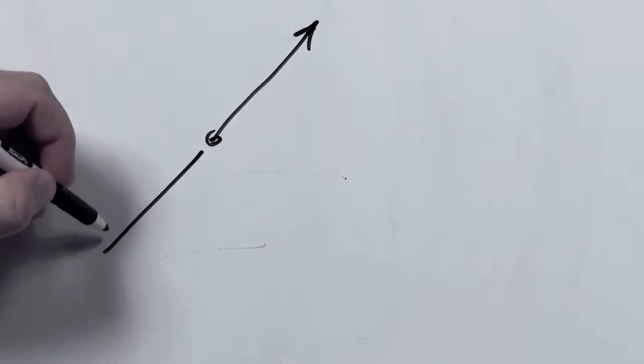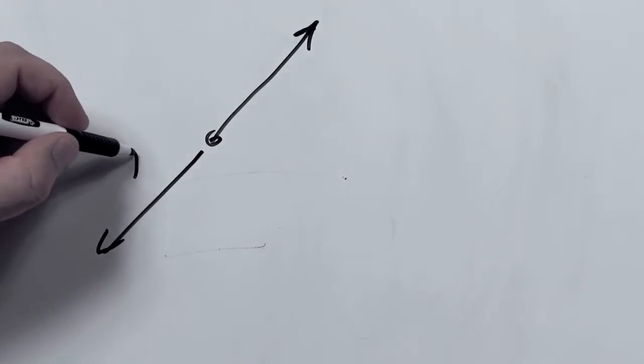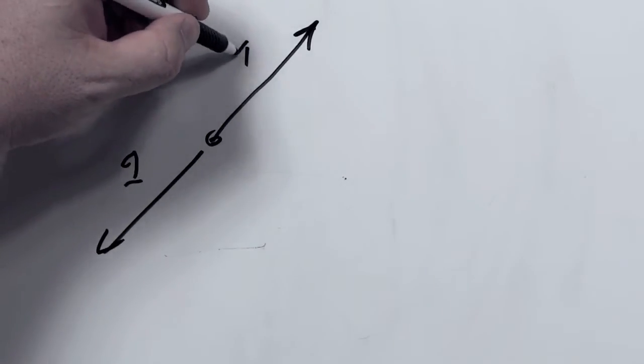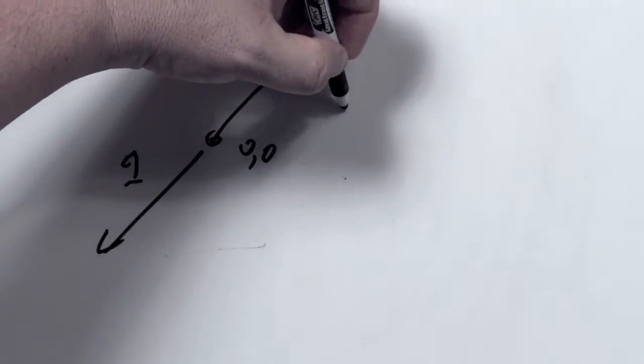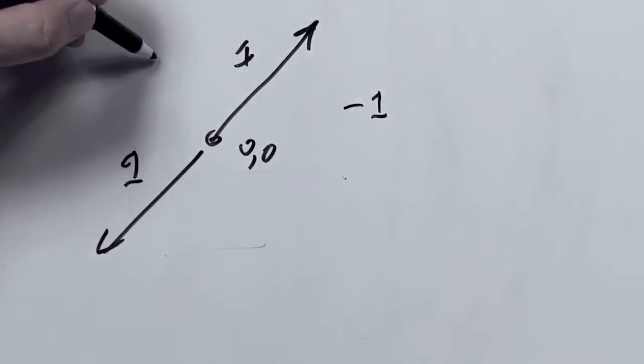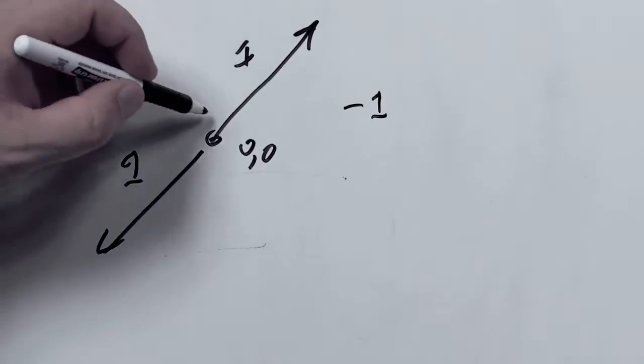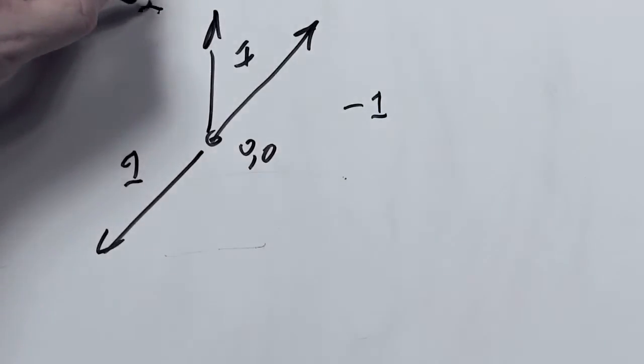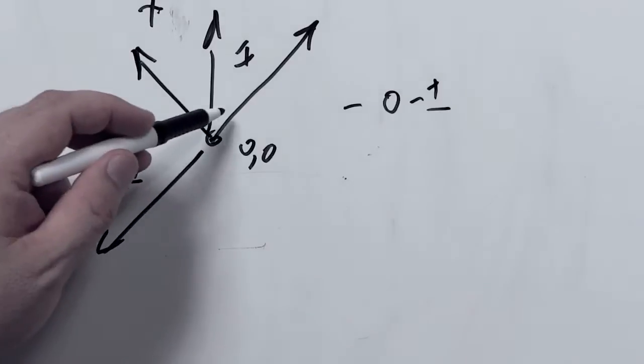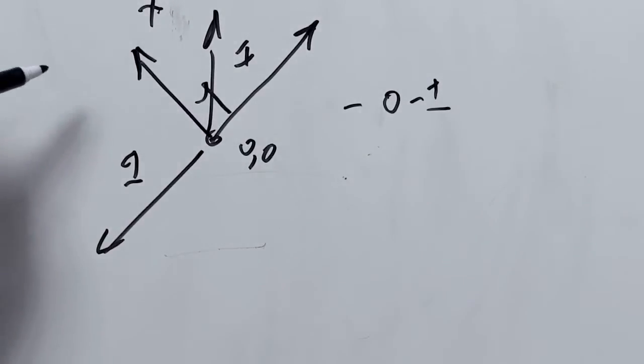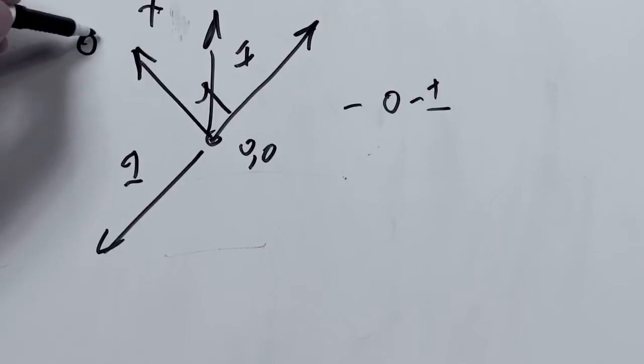We have two unit vectors here, so they have a length of 1. One of the properties of the dot product is that it will be negative if the vectors are facing away from each other, and it will be positive if they're facing towards each other. If the angle between them is a right angle, then the dot product will be 0, which is essentially the cosine.